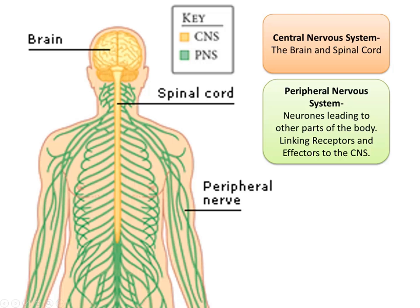The nervous system is made up of two parts: the CNS, or central nervous system, which consists of the brain and the spinal cord. In the central nervous system, the brain is responsible for your conscious actions, while the spinal cord and parts of your brain are responsible for involuntary or unconscious actions. The central nervous system is connected to the rest of your body through the peripheral nervous system, which are neurons and neural pathways linking it to receptors and effectors all around your body.